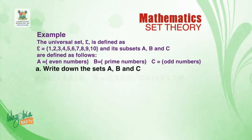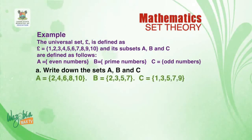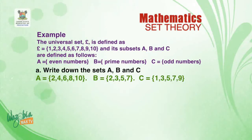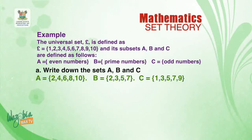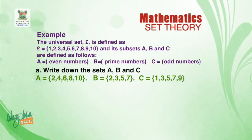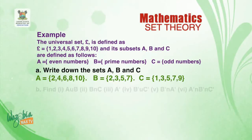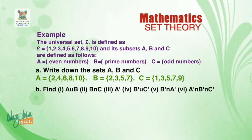Set A — even numbers from the universal set: A = {2, 4, 6, 8, 10}. Set B — prime numbers from the universal set: B = {2, 3, 5, 7}. Set C — odd numbers from the universal set: C = {1, 3, 5, 7, 9}. With this, we have written down all the subsets A, B, and C of the universal set.